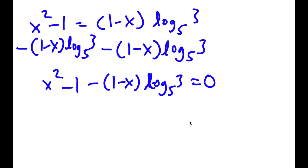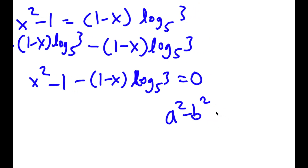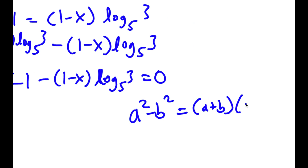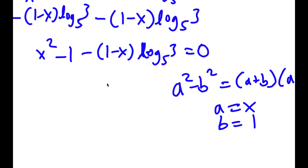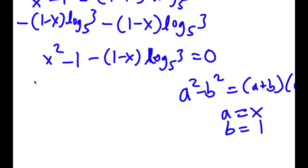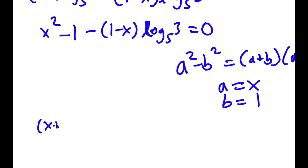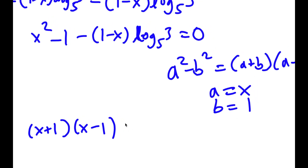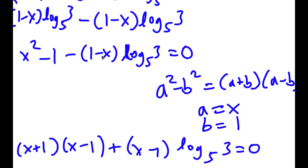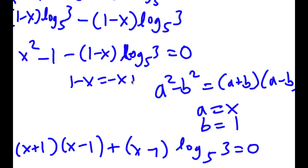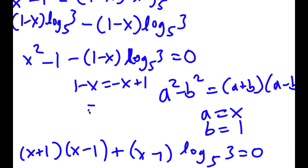Now if I have something in the form a squared minus b squared, this is equal to a plus b times a minus b. In this case, a is equal to x and b is equal to 1. So x squared minus 1 equals x plus 1 times x minus 1. And now I have that plus x minus 1 times log base 5 of 3 is equal to 0, because 1 minus x is the same as negative x plus 1, and the negative of that is x minus 1.